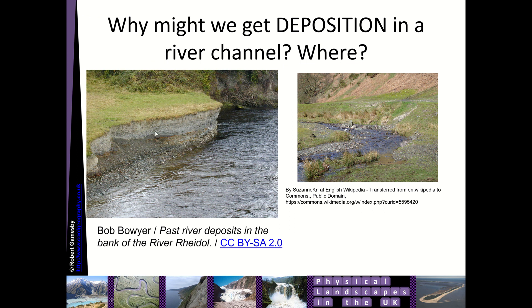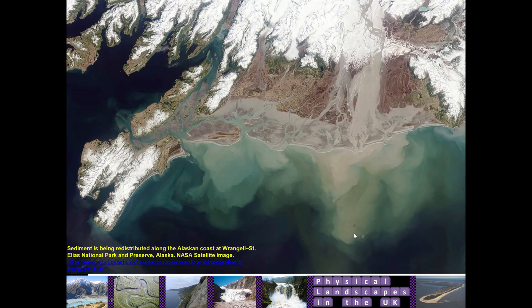We do get deposition in rivers as well. Here you can see where rivers vertically eroded and exposed some previously deposited sediments. You can see the layers in the sediment, those have been laid down in the past by river flooding. We can see all the sediments here at the base of the river. Wherever the river slows down and loses its energy, we'll get deposits of sediment. This is a satellite image from NASA.